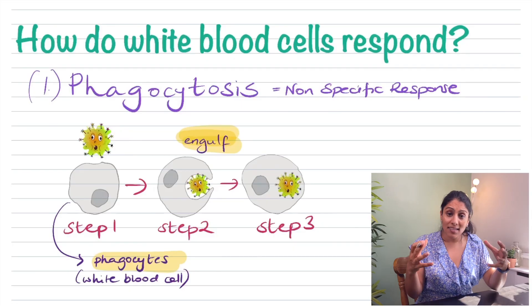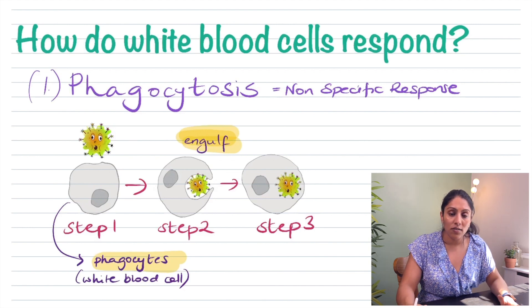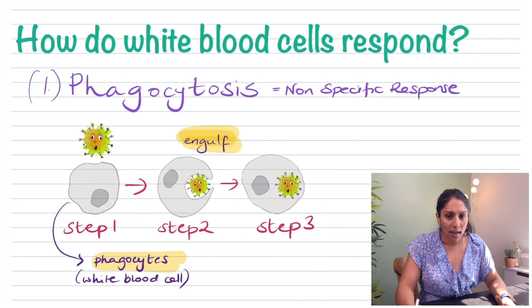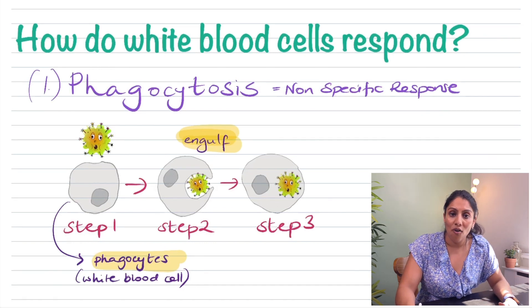Phagocytosis is a non-specific response, just like the first line of defense (skin, ears). These defenses don't choose which pathogens to eliminate — they just remove anything they identify as foreign. Similarly, phagocytes don't select which pathogen they kill; they simply engulf as many as they recognize as foreign.